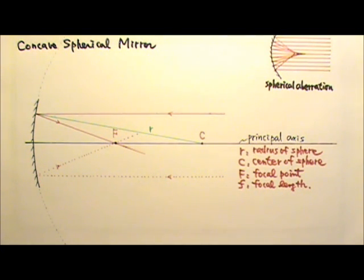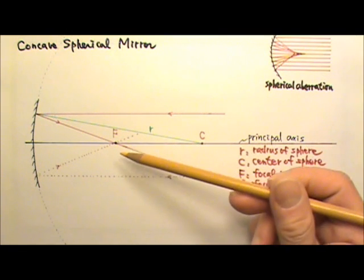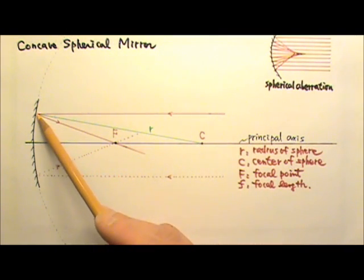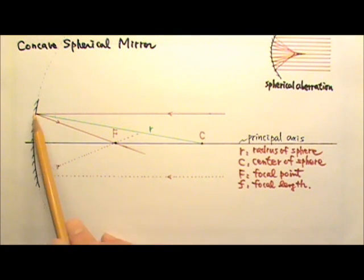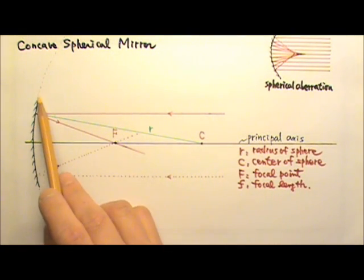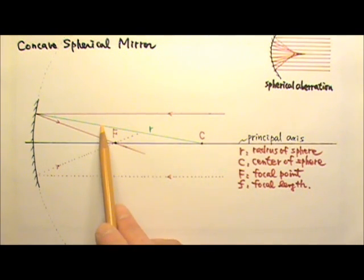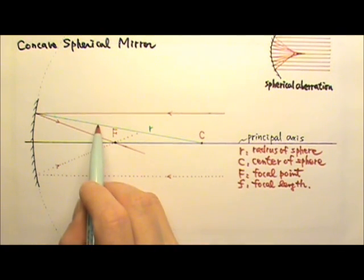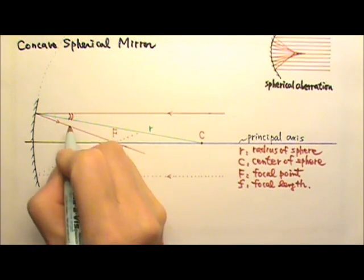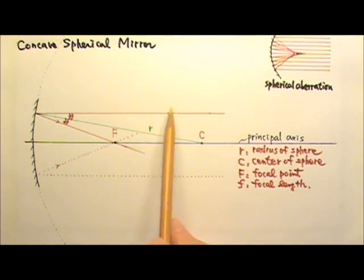Now let's derive an equation for the focal length of the mirror. Let's look at this paraxial ray coming in, hitting the mirror and getting reflected through the focal point. The ray gets reflected by the spherical mirror and must follow the law of reflection, which means the angle of incidence has to equal the angle of reflection. The radius is always perpendicular to the tangent line, and the surface of the mirror is tangent to the sphere, therefore perpendicular to the radius. That means this radius is the normal line for this mirror, giving us the angle of incidence and the angle of reflection, which must be equal.